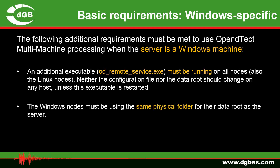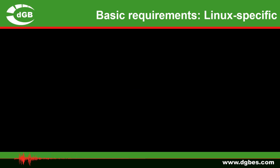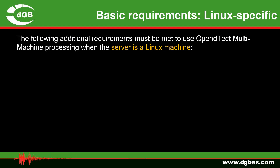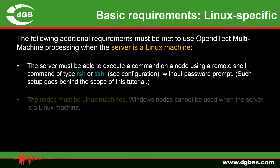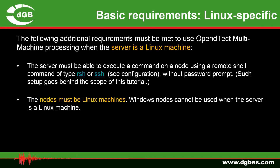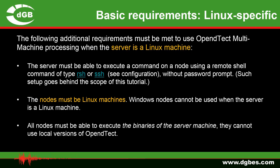The Windows nodes must be using the same physical folder for the data route as the server. There are also platform-specific requirements when the server is a Linux machine. The server must be able to execute a command on a node using a remote shell of type RSH or SSH without a password prompt. The nodes must be Linux machines — Windows nodes cannot be used when the server is a Linux machine. And all nodes must be able to execute the binaries of the server machine; they cannot use local versions of OpenDTec.